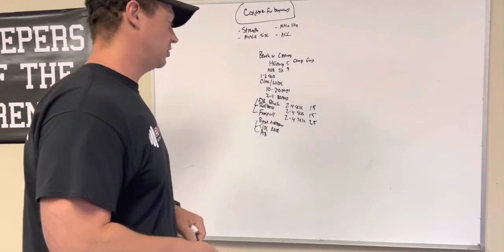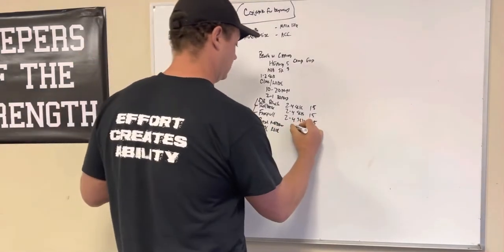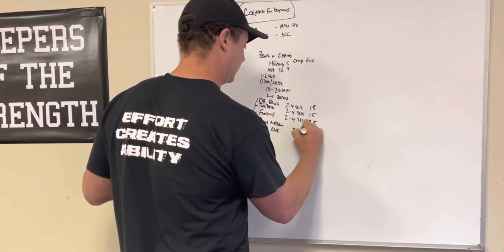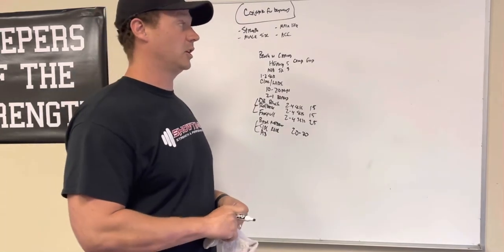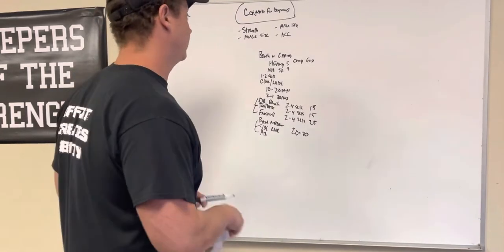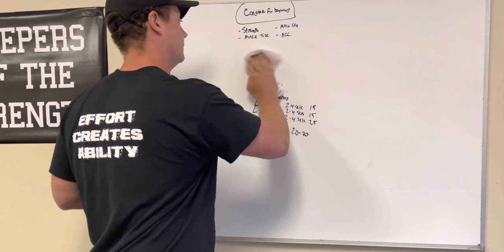Then band push downs, side raise, and some more abs. And one to three sets there. And again, this is just volume staying high. In all of these, you can go sets of 20 to 30 reps and really force the blood in there. That's also gonna help aid in the recovery process.